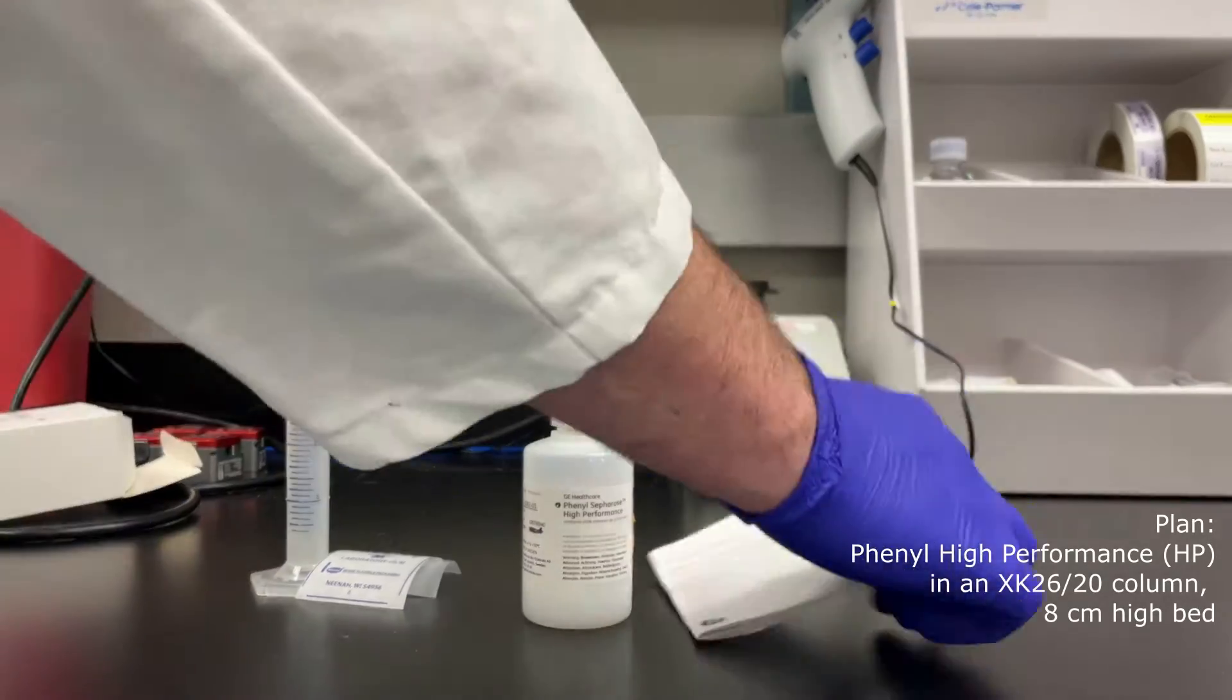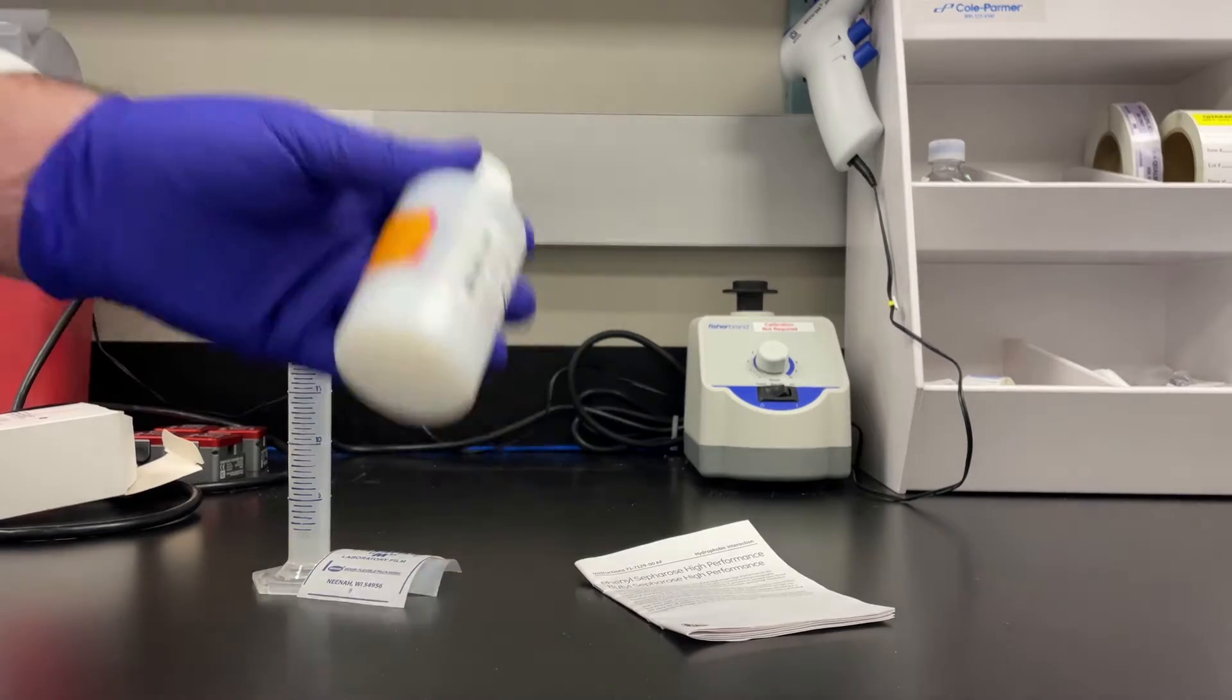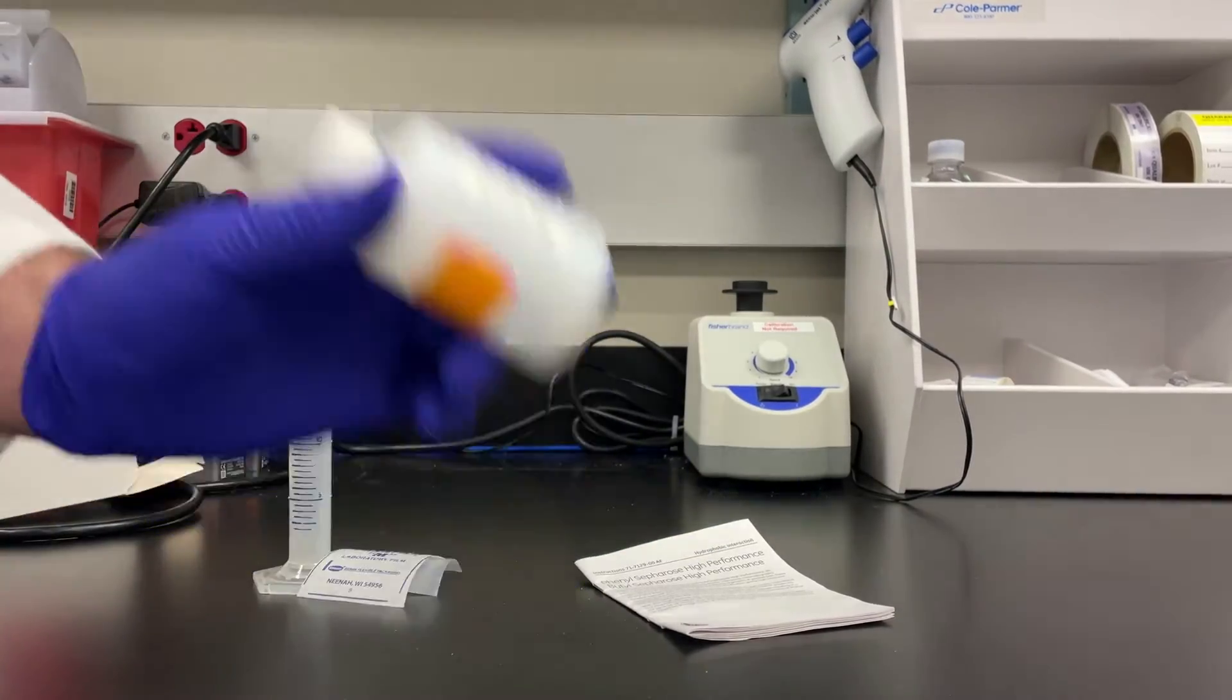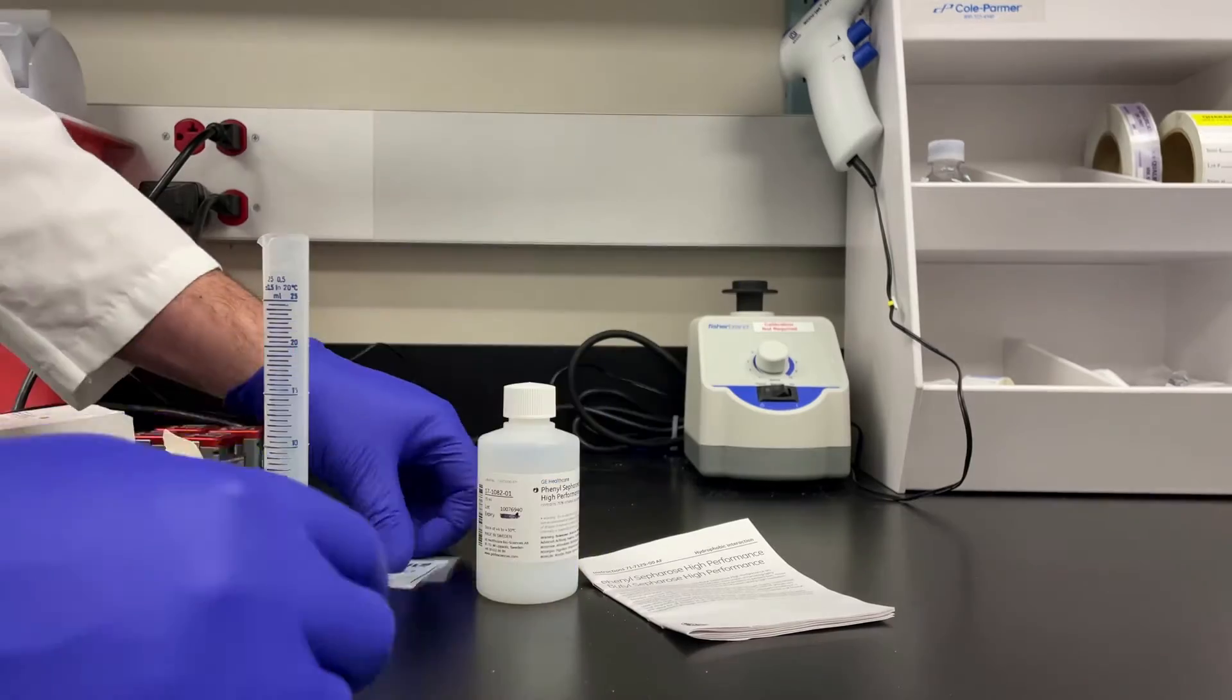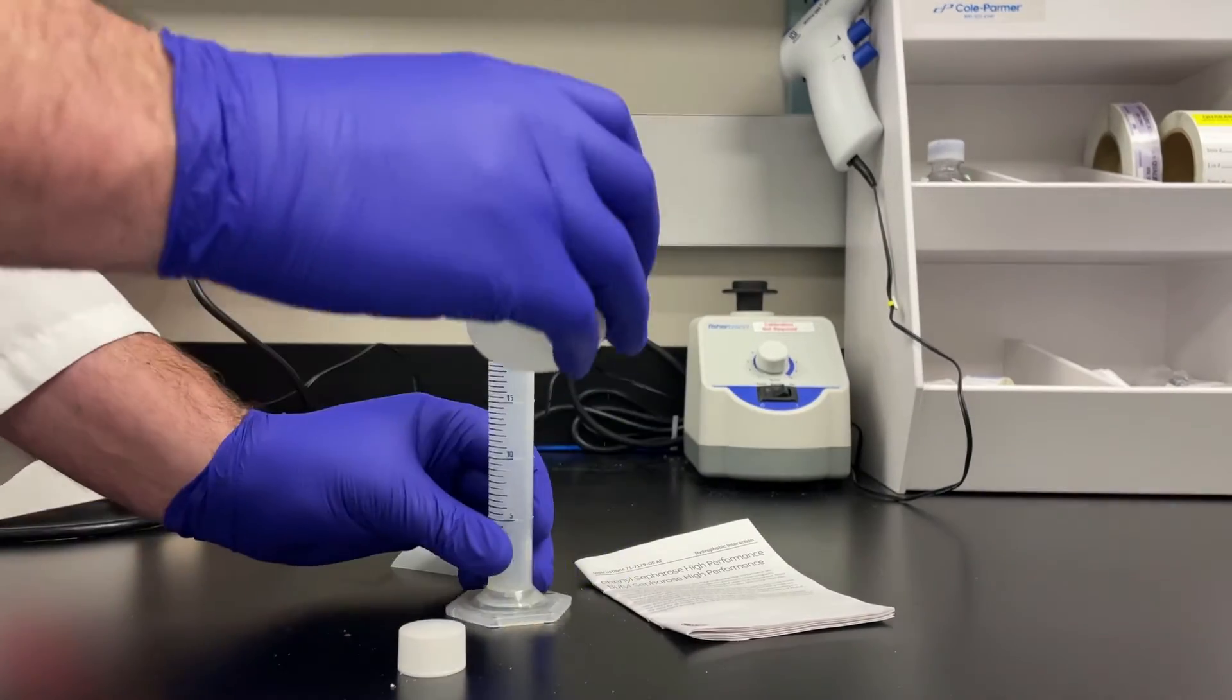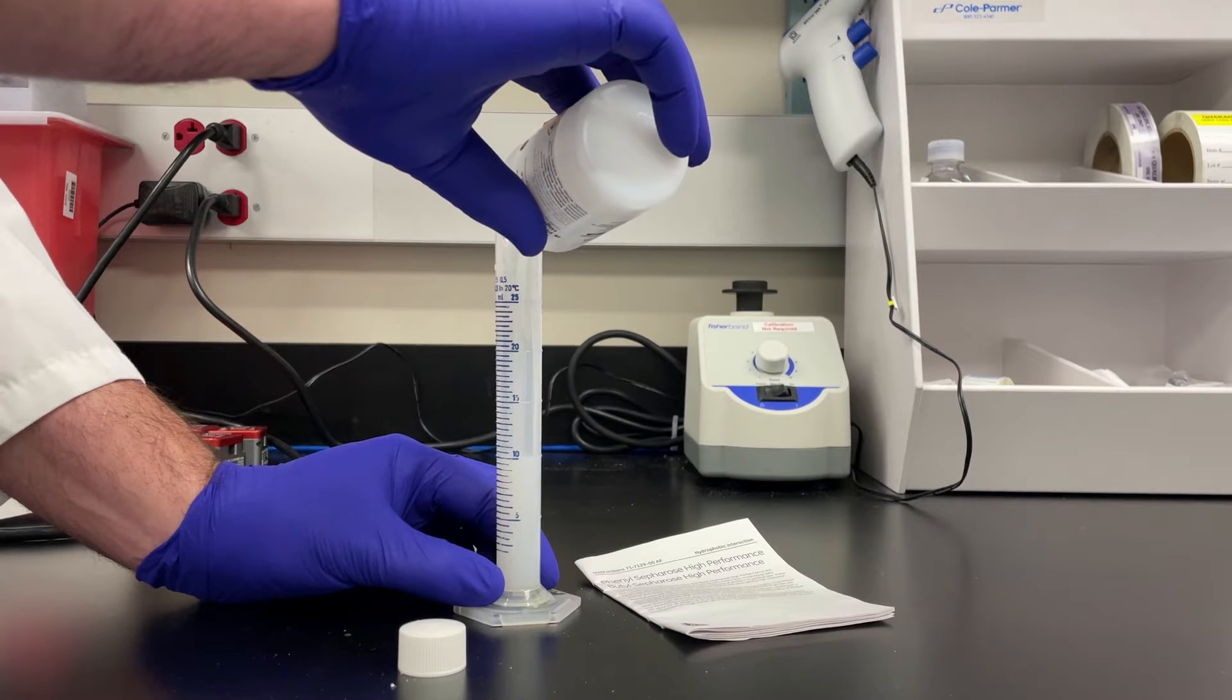This is FEDL HP chromatography resin. We're going to start by measuring the slurry content of what's in the bottle. We'll do this by resuspending the resin in the solution and then pouring it into a graduated cylinder. I'm looking for about 20 mils here, but it doesn't really matter. We're just going to divide one number by the next.